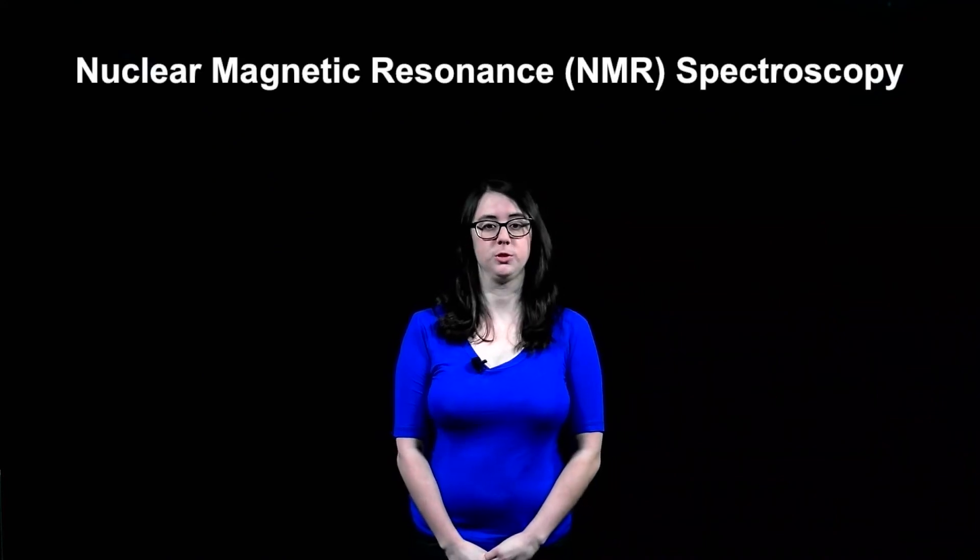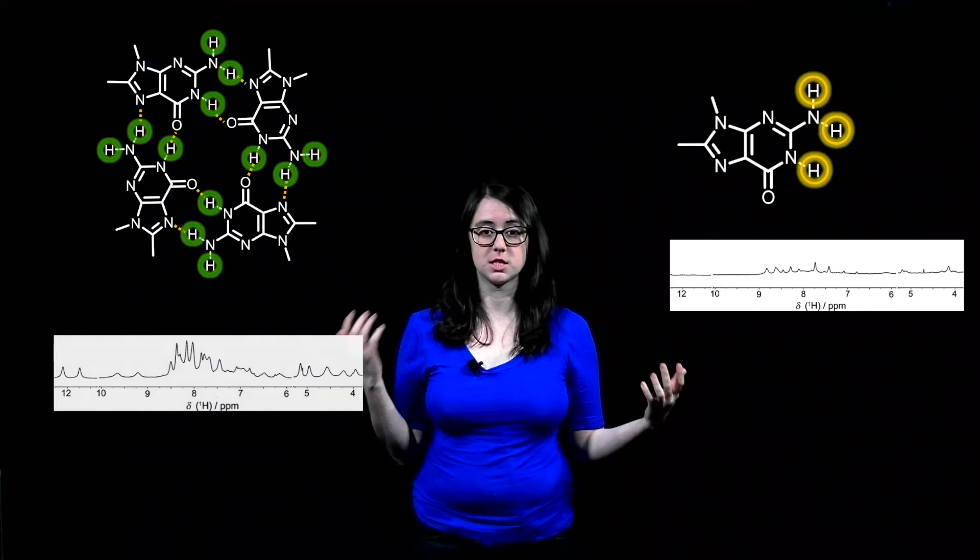Like I mentioned before, molecules are so small that we can't actually see if we've made the structure that we wanted. So we need special tools that help us identify the structure of this guanine quadruplex. One of these tools is NMR, or nuclear magnetic resonance. NMR tells us about the environment that a hydrogen atom is in. For instance, when the molecule is in solution just floating around, the spectrum will look something like this. But as it forms a more ordered structure, the spectrum changes.